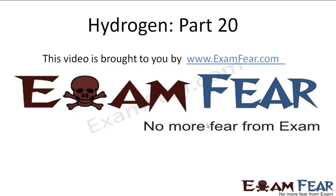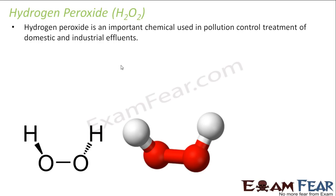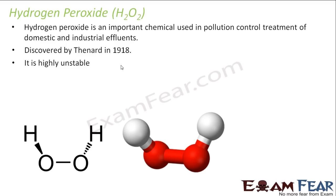This video on hydrogen part 20 is brought to you by examfear.com. Let's learn about hydrogen peroxide. It is a very important chemical used in pollution control and treatment, and also as rocket fuel. It was discovered by Thénard around 1818. It is very unstable and does not occur freely in nature.